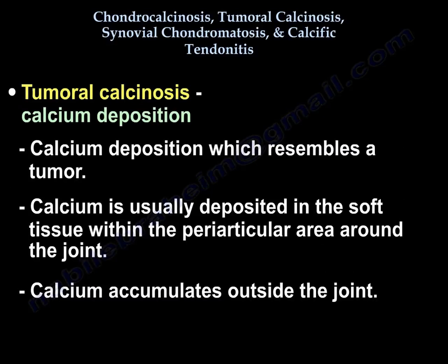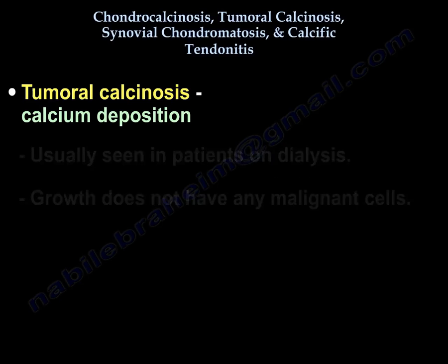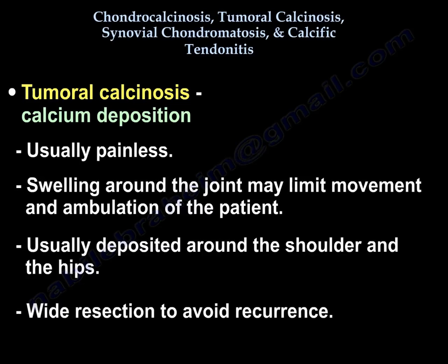Tumoral calcinosis means calcium deposition which resembles a tumor — it's like a growth because it grows. The calcium is usually deposited in the soft tissue in the periarticular area around the joint; it accumulates outside the joint and not inside the joint. It is usually seen in patients with dialysis, especially long-term renal dialysis. This growth is not a neoplasm, not a sarcoma, it doesn't have any malignant cells — it's just deposition of calcium in the soft tissue around the joint. It's usually painless, but the patient will have swelling around the joint that enlarges and may limit movement and ambulation.